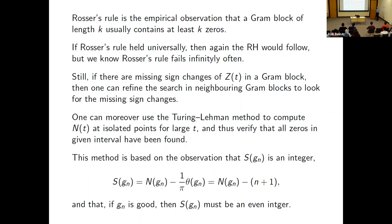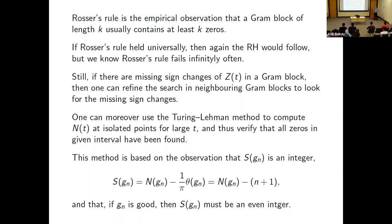On top of this comes the Turing–Lehman method. Turing's paper had the right idea but contained numerical mistakes; Lehman corrected everything. The method allows you to compute N(t) at an isolated large point. Previously, finding N(t) required computing all zeros from the start. Turing's method lets you look at data in a small neighborhood of a large t and compute N(t) exactly — without knowing anything about zeros down at the beginning.